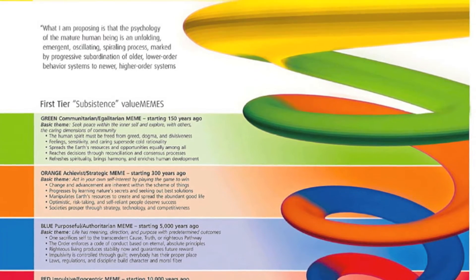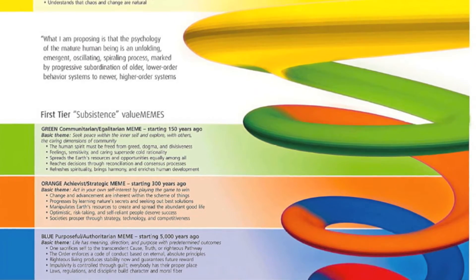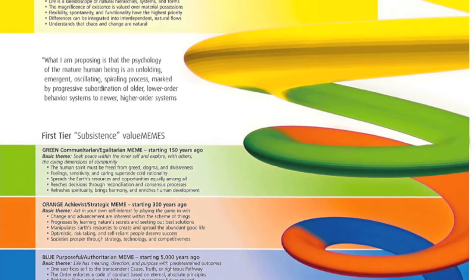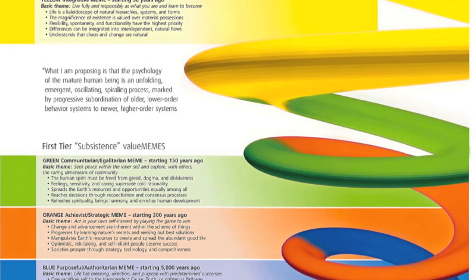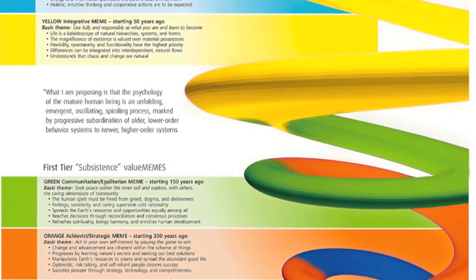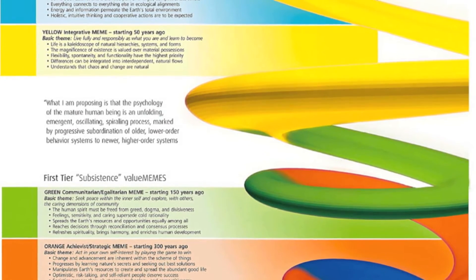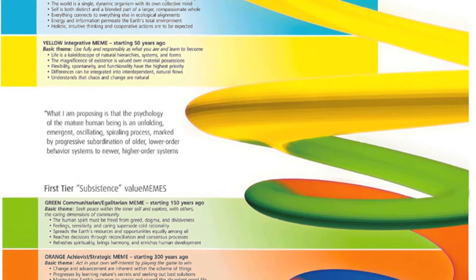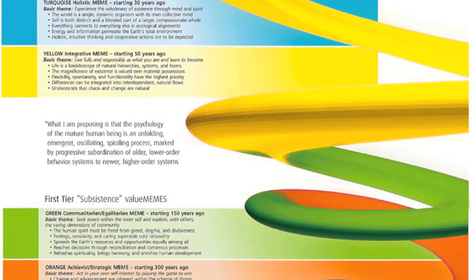The problem I have with this color system, Saeed, is that my favorite color is purple, and it's way down at the bottom. So where does this color coding come from?